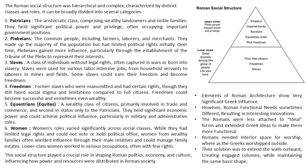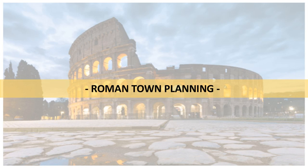Discussing about the elements of Roman architecture, which shows the significance of Greek influence — however, Roman functional needs sometimes differed, resulting in interesting innovations. They were less attached to ideal forms and extended Greek ideas to make them more functional. Romans needed interior spaces for worship, whereas the Greeks worshipped outside. Their solution was to extend the walls outward, creating engaged columns while maintaining the same basic shapes.